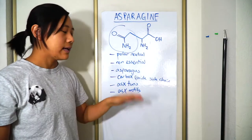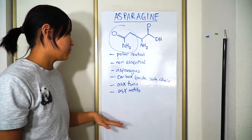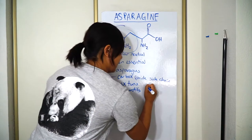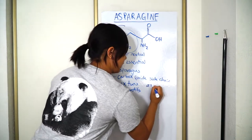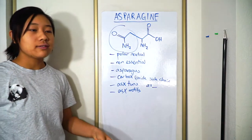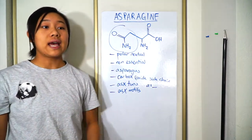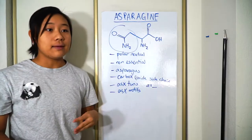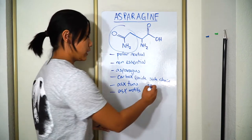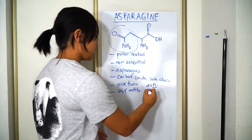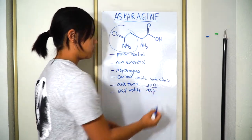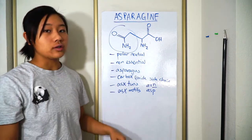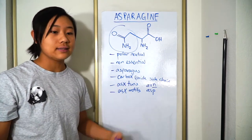Asparagine is found in what's called ASX turns and ASX motifs. ASX stands for A, S, and then anything — because in these motifs, either asparagine or aspartic acid can participate. Asparagine is actually derived from aspartic acid, which is why it's non-essential. So the X can stand for either ASN (asparagine) or ASP (aspartic acid).